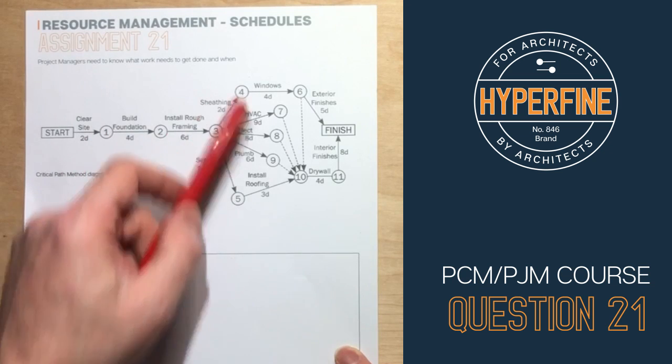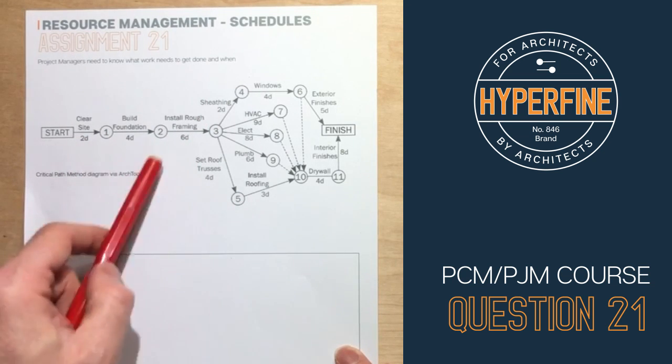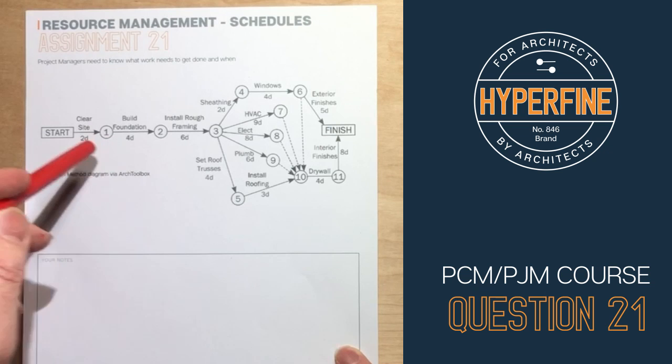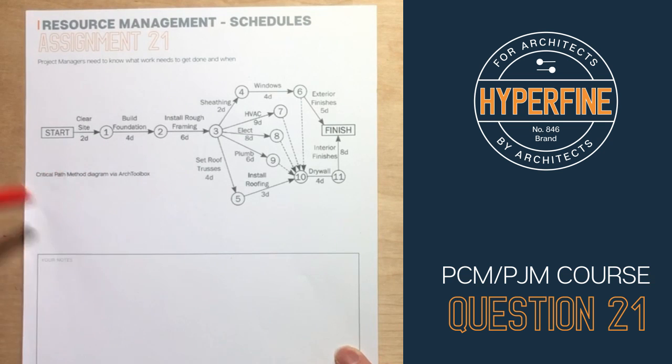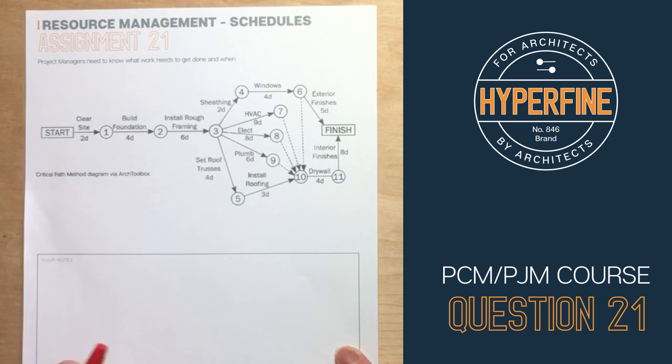The numbers in the circles are milestones. Those don't necessarily have to be numbers — they could be letters, symbols, or anything — but it just makes sense to call them milestone one, milestone two, milestone three.